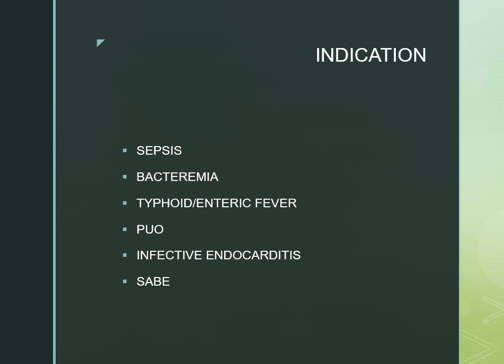Blood culture is also very important for typhoid and enteric fever. If the patient has PUO — pyrexia of unknown origin, now referred to as fever of unknown origin — meaning there is a fever and we cannot diagnose why it is coming, blood culture is needed. It is also indicated for infective endocarditis, subacute bacterial endocarditis, and chronic infections like brucellosis.